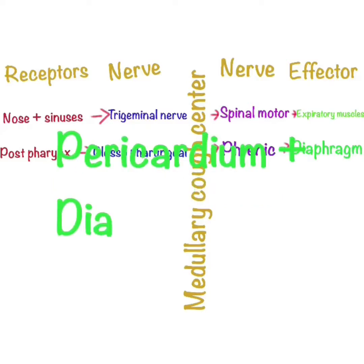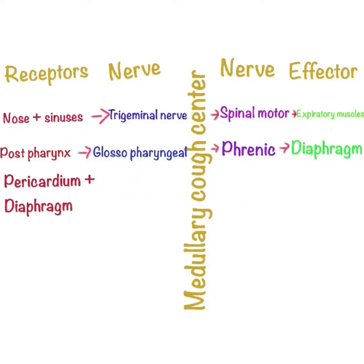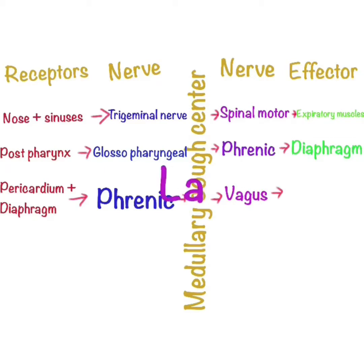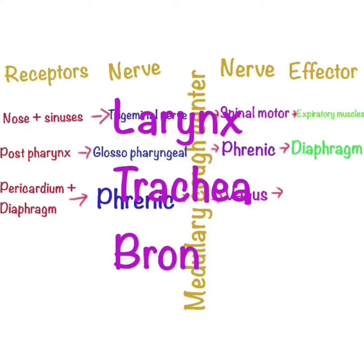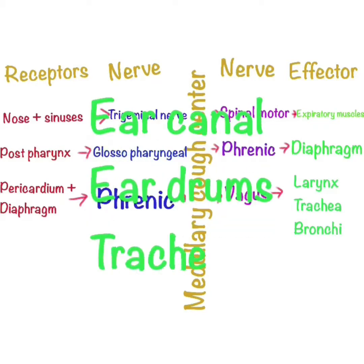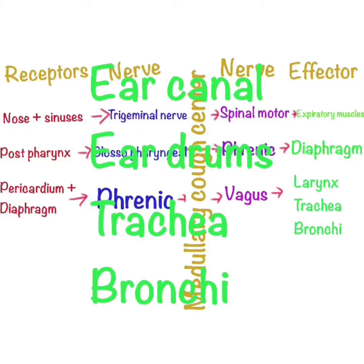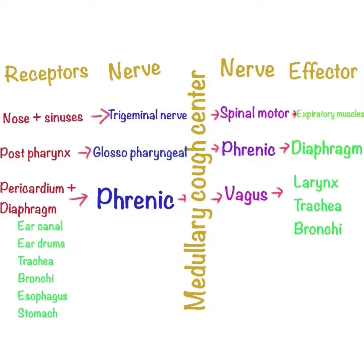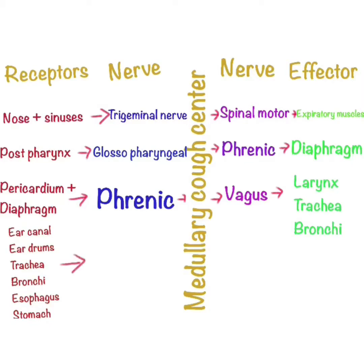The third receptor is the pericardium or diaphragm. When there is some stimulus produced, it travels through the phrenic nerve to the medullary cough center. The medullary cough center generates a response through the vagus nerve, which is the 10th cranial nerve, to the larynx, trachea, and bronchi. Those muscles contract and cough is produced. The last sensory receptors include the ear canal, ear drum, trachea, bronchi, esophagus, stomach, and pleura. Stimuli from these areas travel via the vagus nerve to the medullary cough center. That was all about the cough reflex arc.